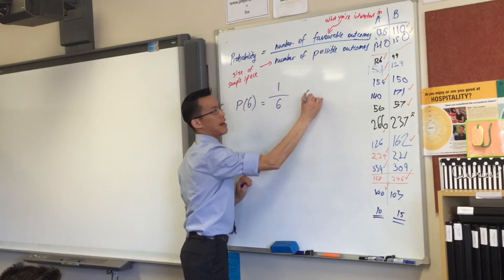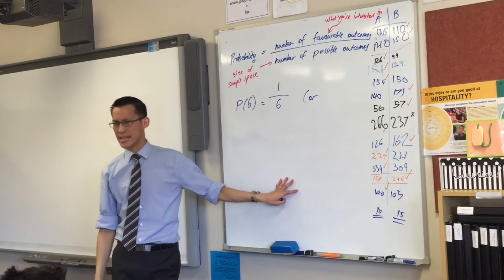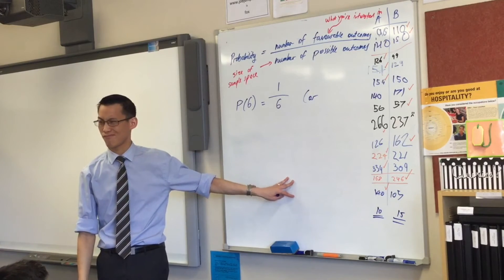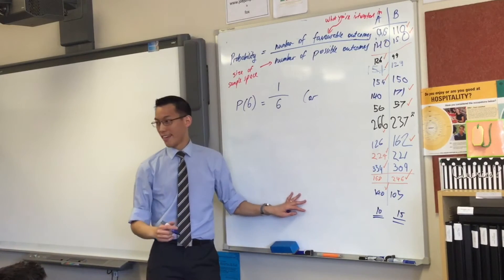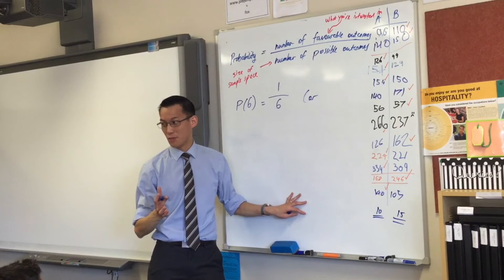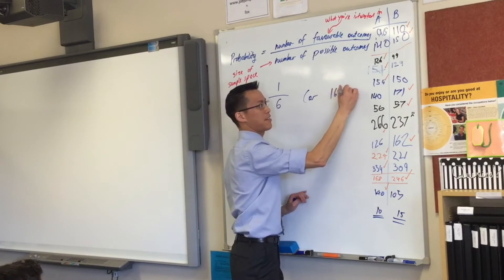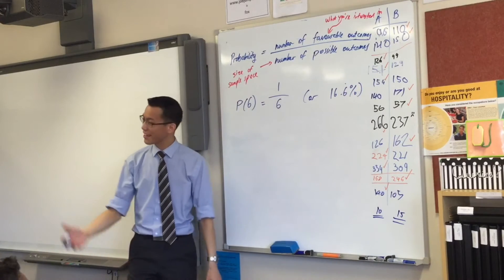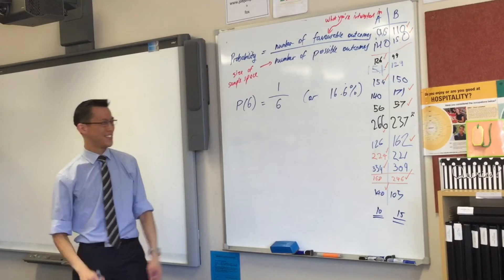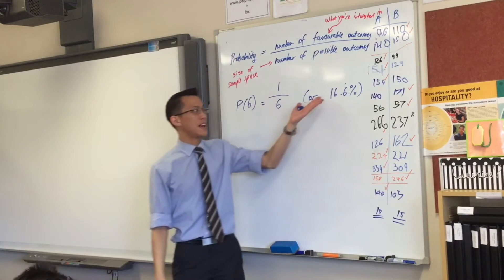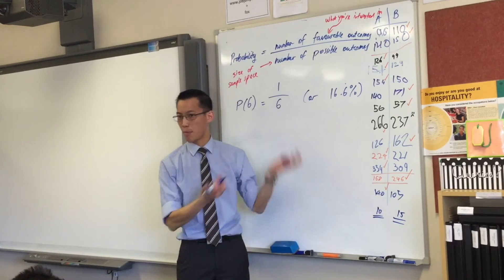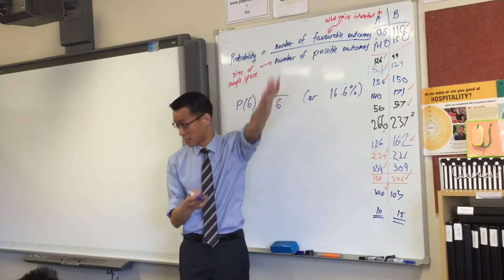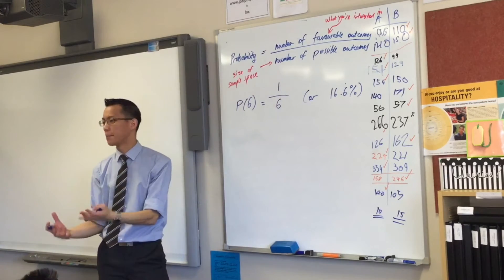I could write that as a percentage. What is 1 sixth as a percentage? Does anyone know? Yes. It's about, I can actually say it exactly. It's 16.6 repeater percent, okay? So, just like if you recall, from fractions, decimals and percentages, you can write it as a fraction, you can write it as a percentage, you can write it as a decimal, 0.16666666. It's all the same number, okay?